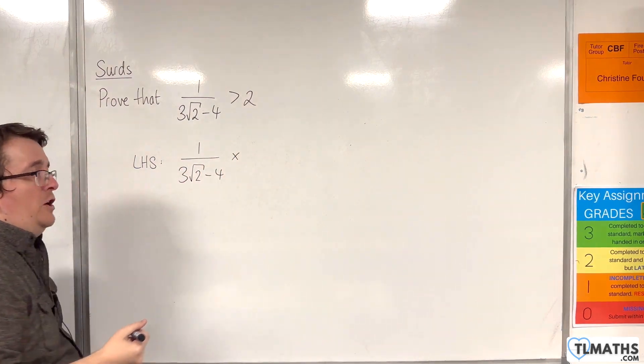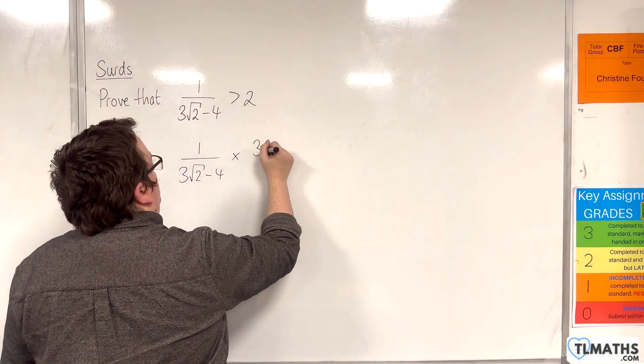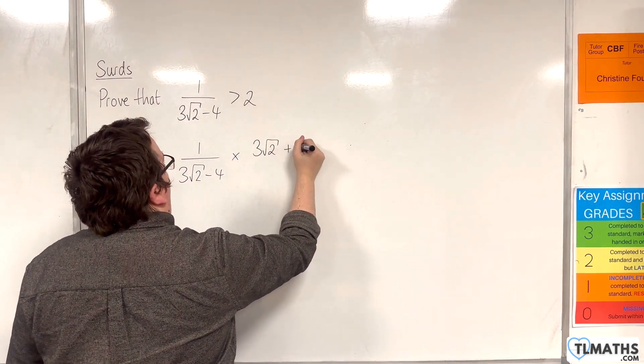Now, I'm going to rationalise the denominator. So, I'm going to multiply top and bottom by 3 root 2 plus 4.